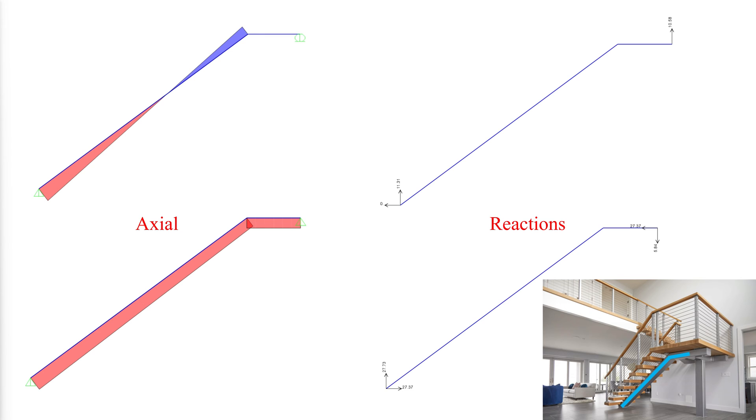It is recommended that stringer member design follow the simple span method, and end connections design, including checks on the support structure, is based on the reaction produced from a frame analysis. This will provide conservative results for deflection, accurate connection design forces, and should provide adequate performance.